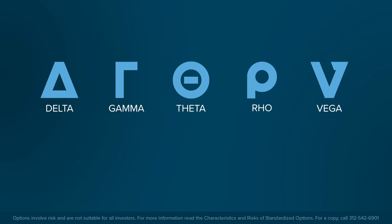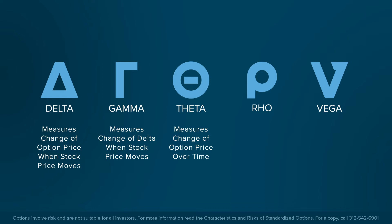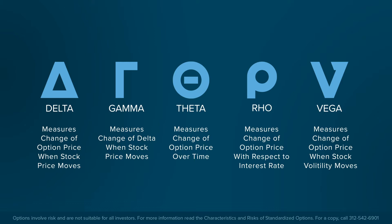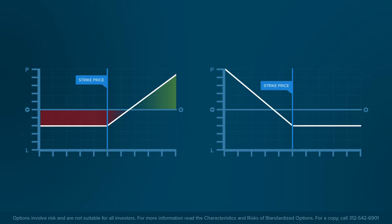These risk variables are called the Greeks because, with the exception of Vega, each risk measure is represented by a letter of the Greek alphabet. The Greeks are dependent upon the inputs for an options pricing model. This lesson assumes that the viewer is familiar with basic option risks, strategies, and terminology.